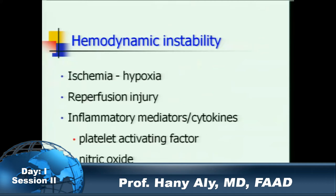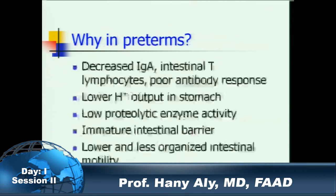You also have hemodynamic instability, hypoxia, and reperfusion injury causing inflammation and cytokines. Why does NEC happen mostly in premature infants? Because the immune system of the premature infant is different, they have lower acid production causing over-colonization with bacteria, and decreased activity of proteolytic enzymes combined with an immature immune system.